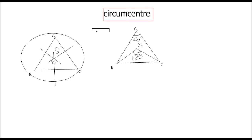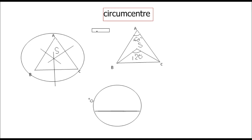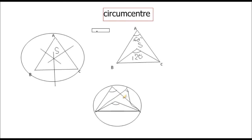This follows from the circle property: the angle made by a chord at the center is double the angle made at the circumference. You can take any side; even if you take another side, the angle at the center is double either of the two angles subtended at the circumference.